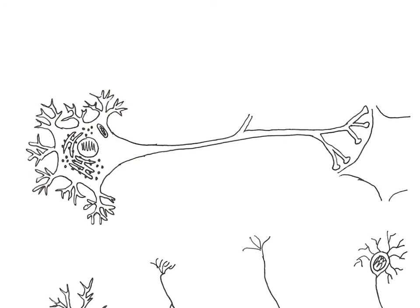Neural tissue consists of two different kinds of cells: neurons and neural glia. Neurons are the basic functional units of the nervous system and can conduct nerve impulses. Neural glia are supporting cells that help to separate, protect, and support the neurons, and can also act as phagocytes.